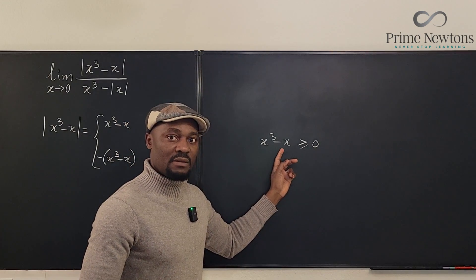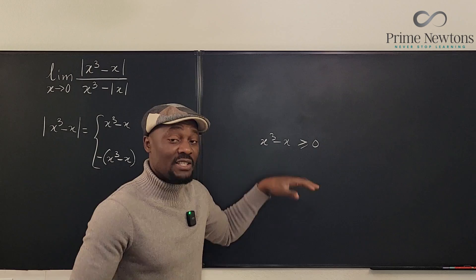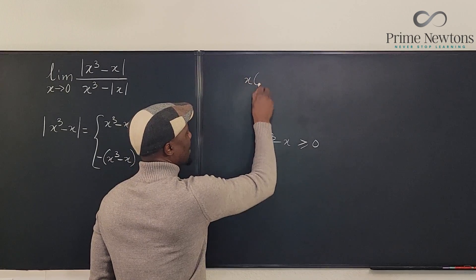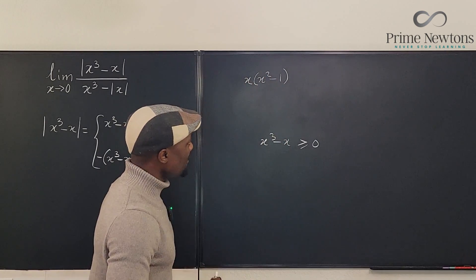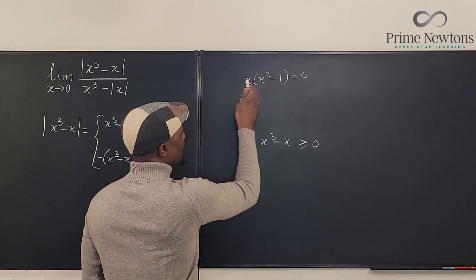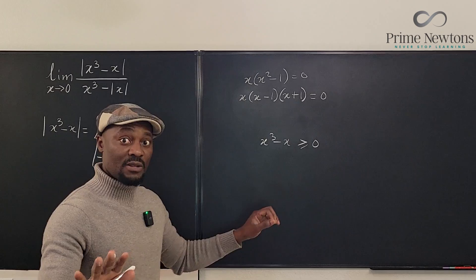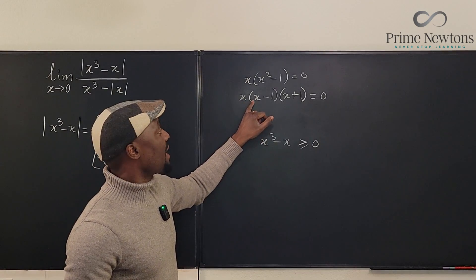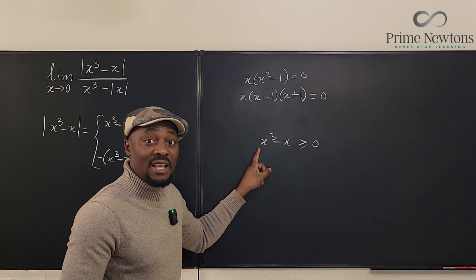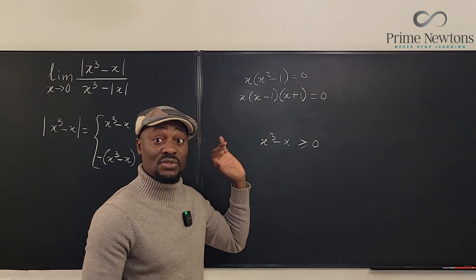It's always good to find the critical numbers of the function, draw a sign chart, and determine when it's positive. We have x(x² - 1) = x(x-1)(x+1) = 0, giving critical numbers x = 0, x = 1, and x = -1. Those are the three numbers we'll use to find which regions satisfy x³ - x ≥ 0. Remember, x cannot equal 0 and x cannot equal 1, so those two points are excluded.